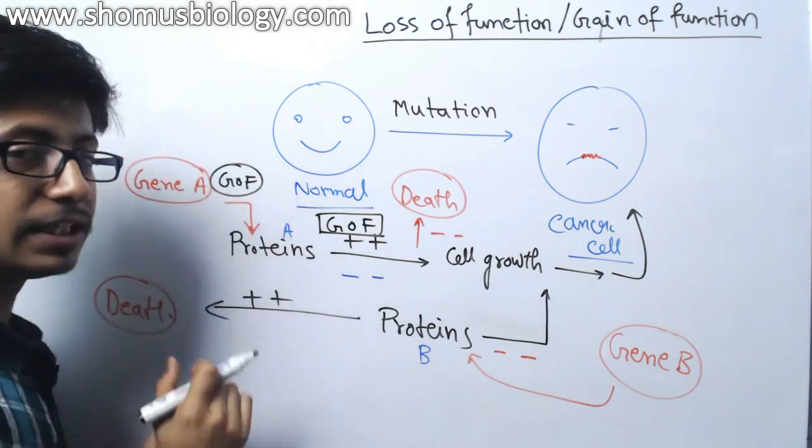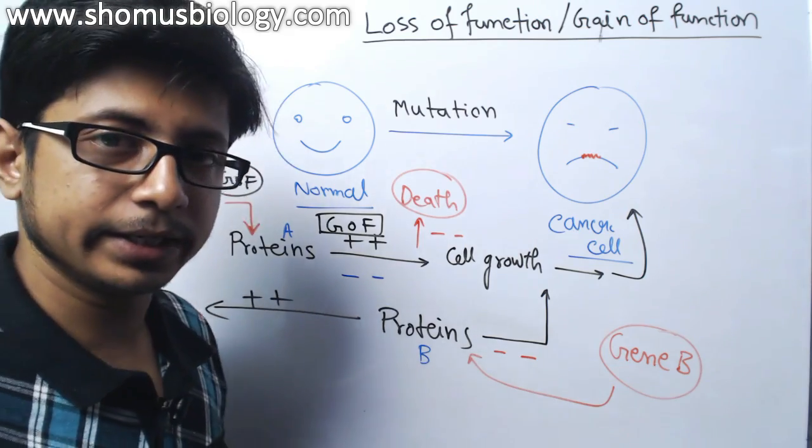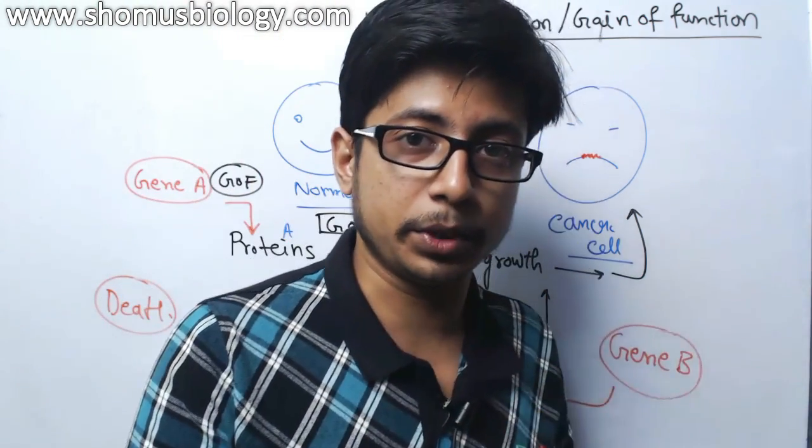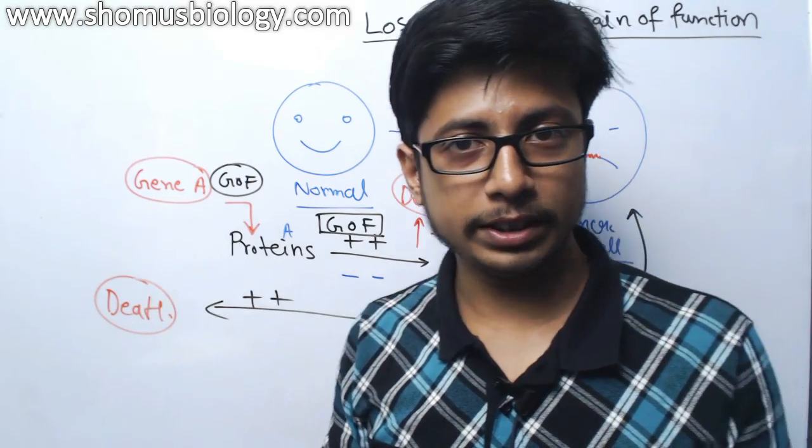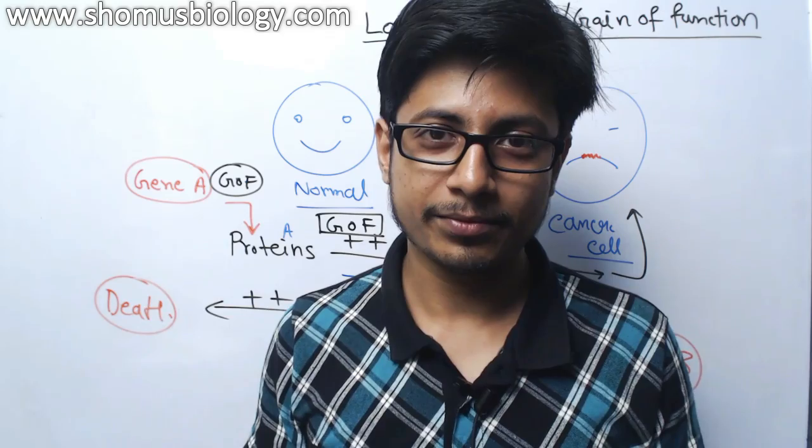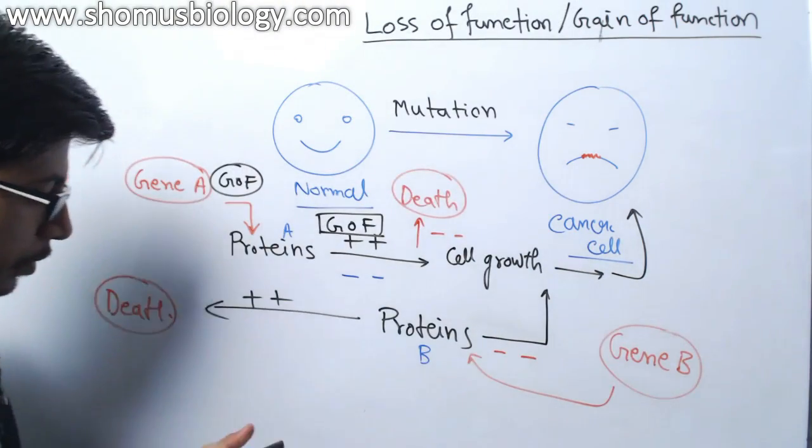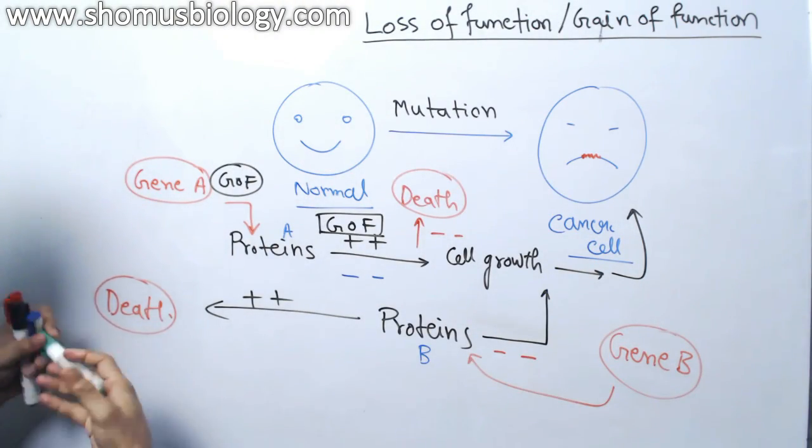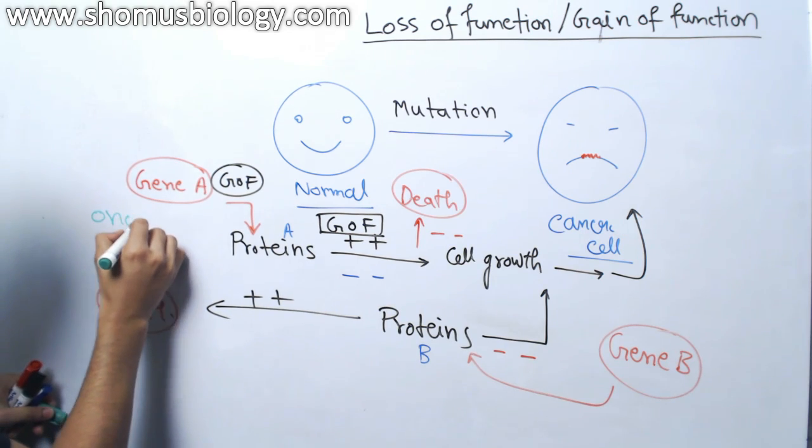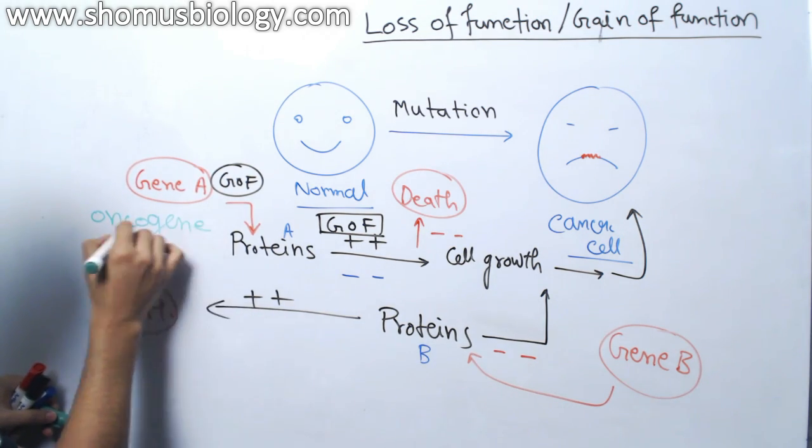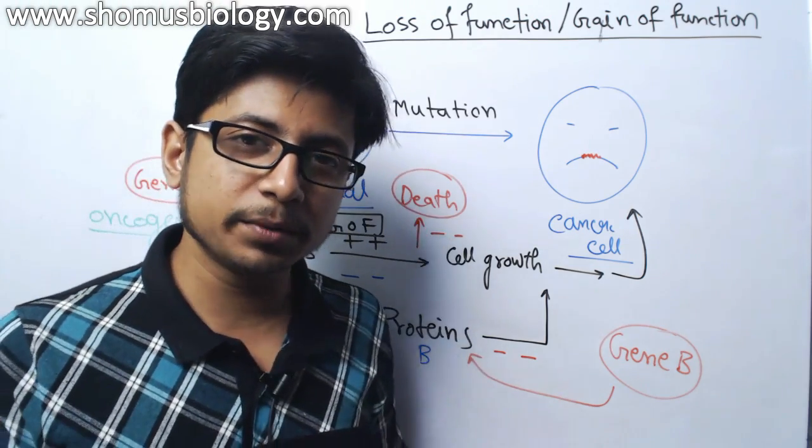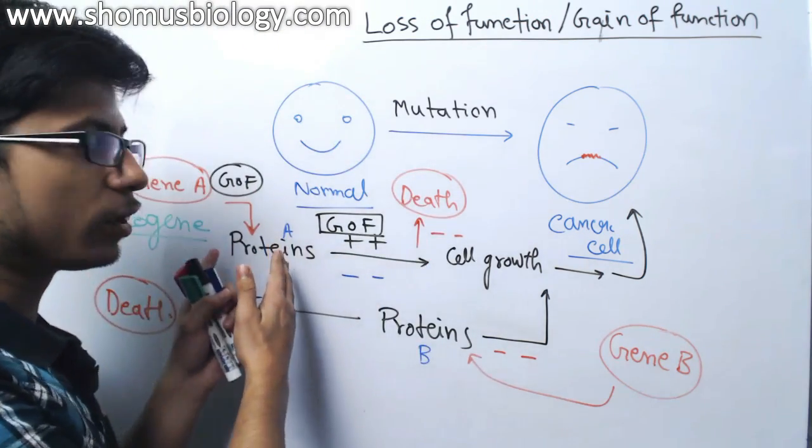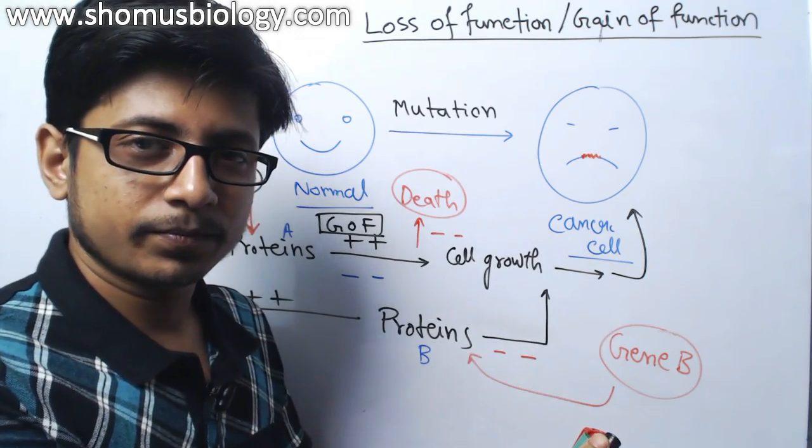So gain of function mutation for few proteins turn the cell into a cancerous cell. And the proteins and genes associated with the gain of function mutation that turns a normal cell into a cancerous cell are known as proto-oncogene or oncogene. This will be known as oncogene. What happens when oncogene gets a gain of function mutation? It turns a normal cell into a cancerous cell.